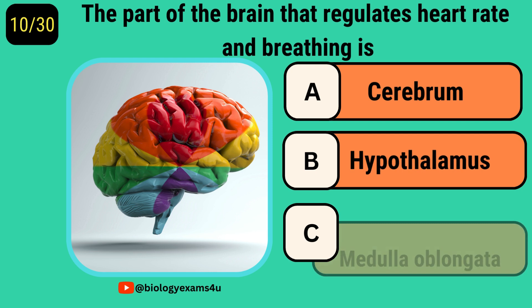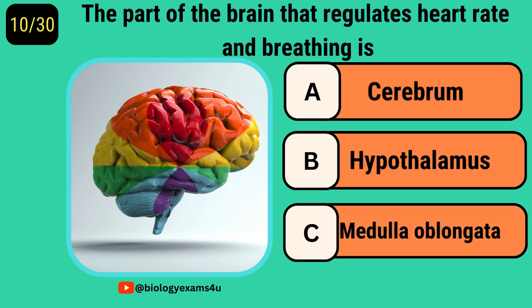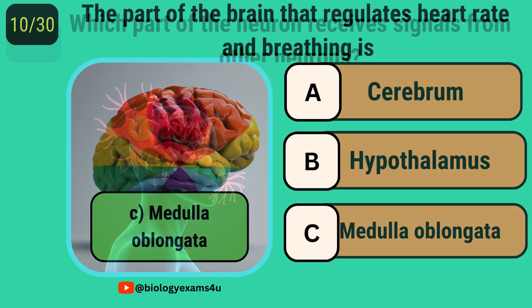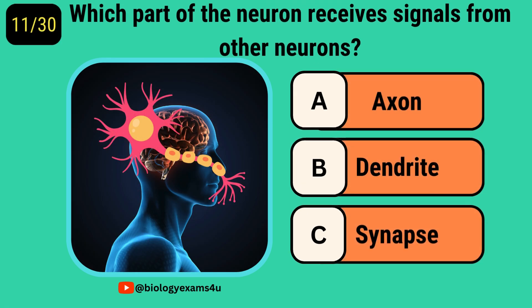The part of the brain that regulates heart rate and breathing is? Medulla oblongata. Which part of the neuron receives signals from other neurons? Dendrite.